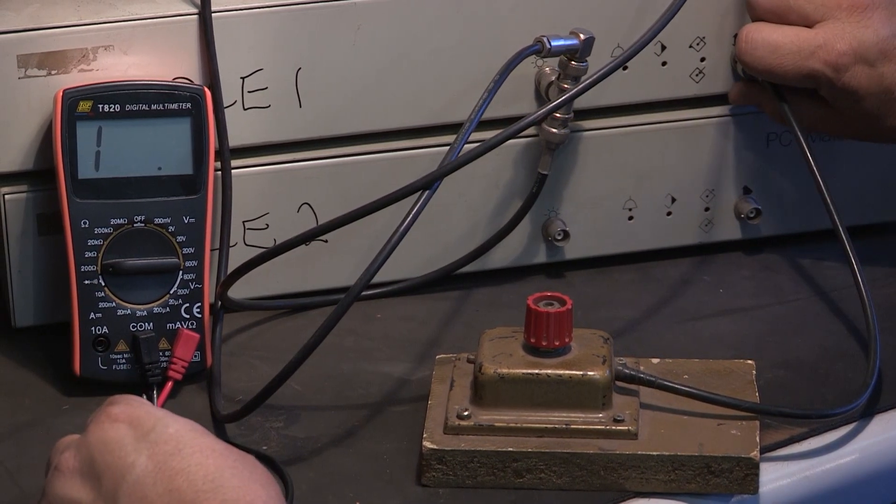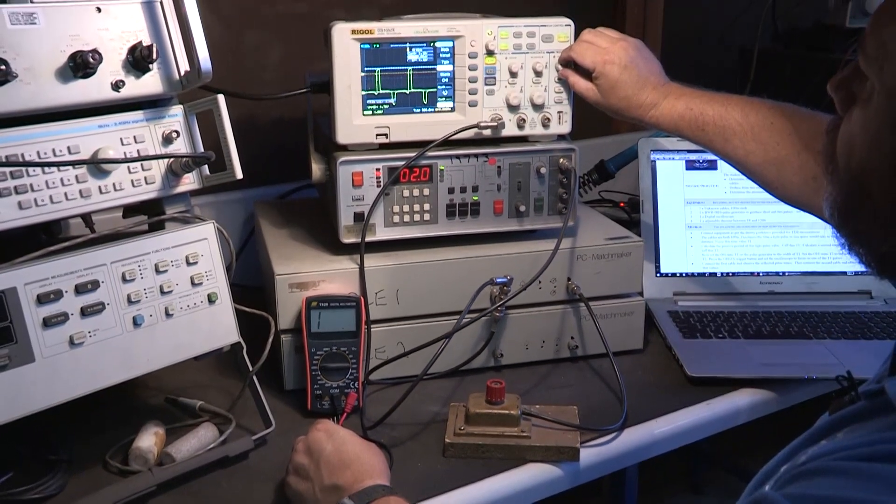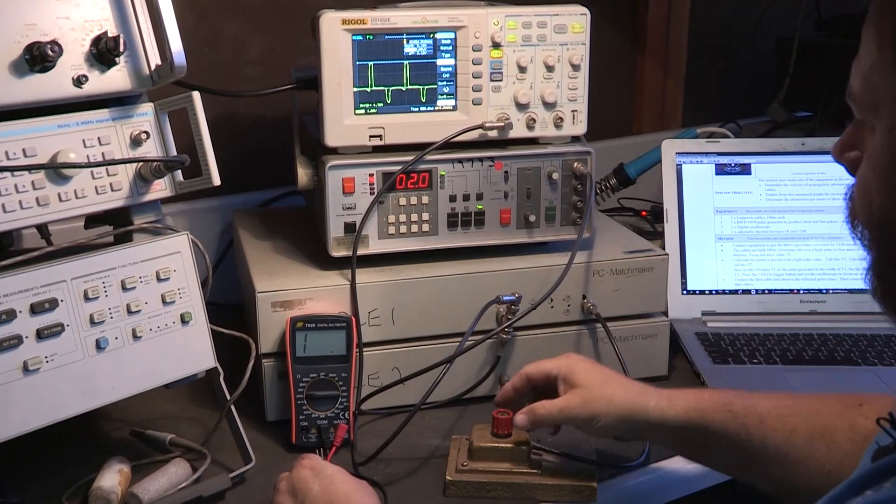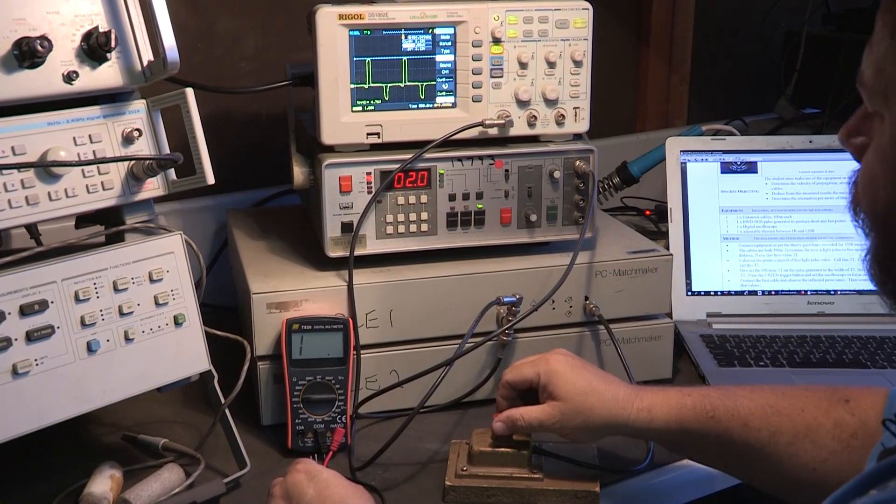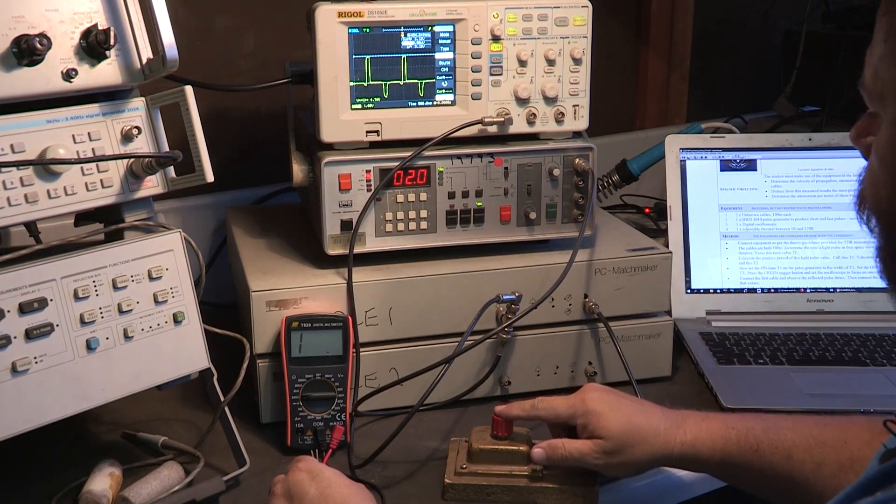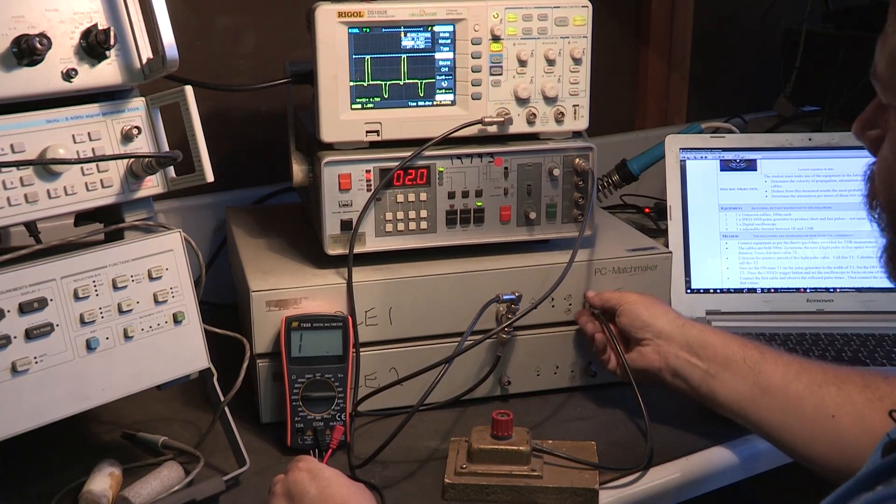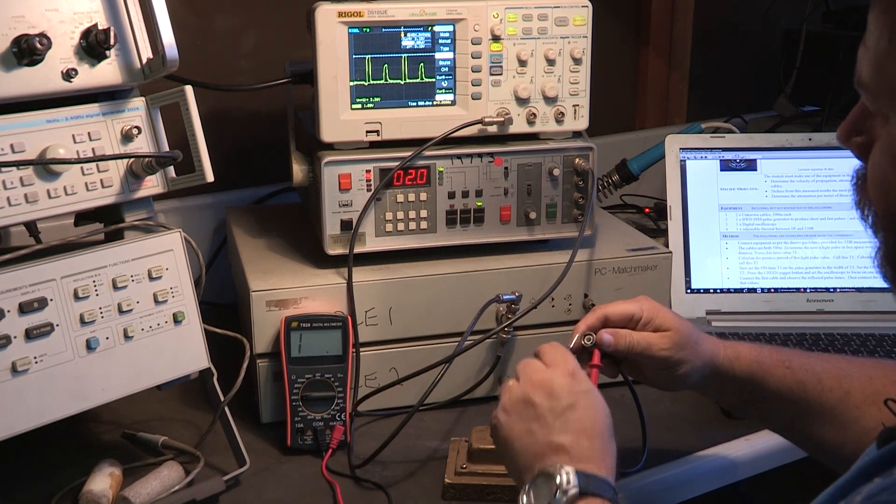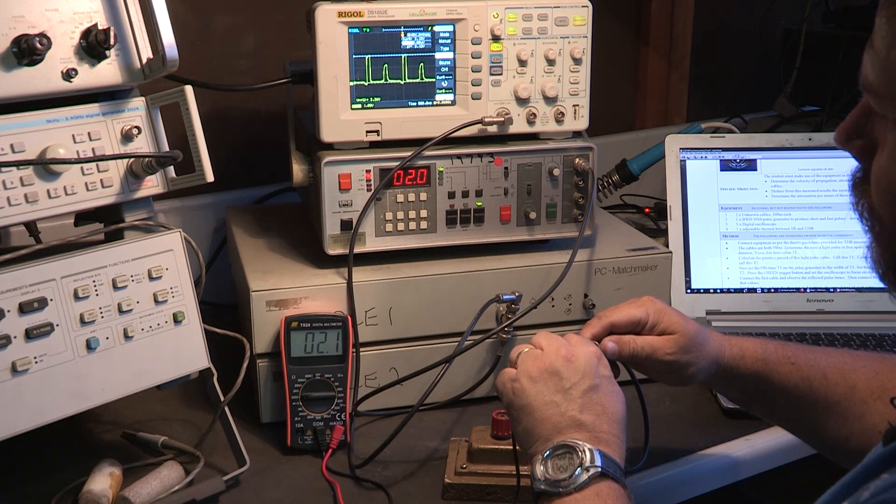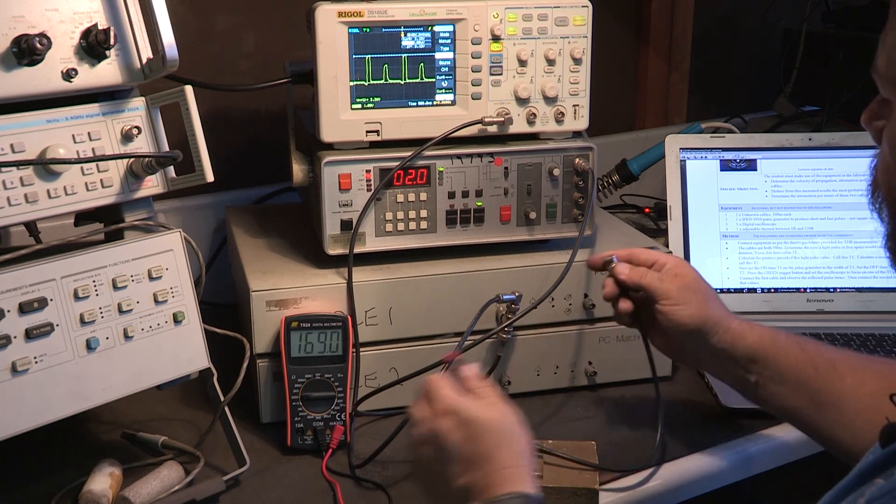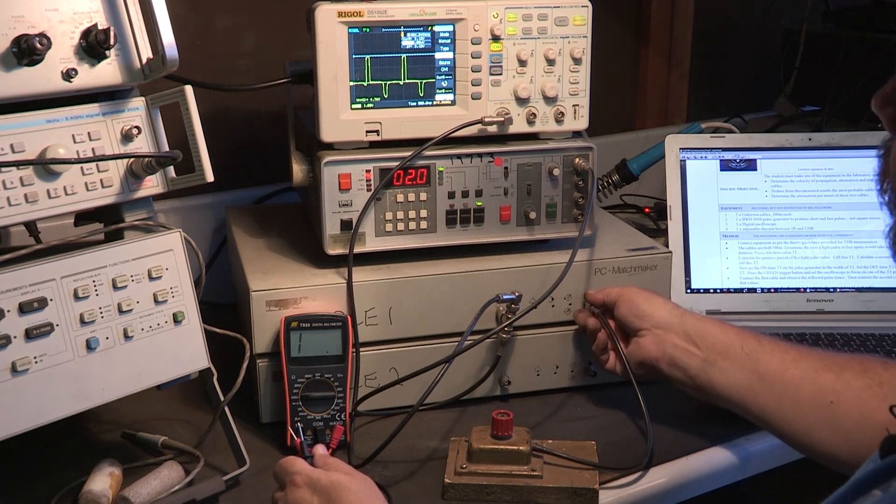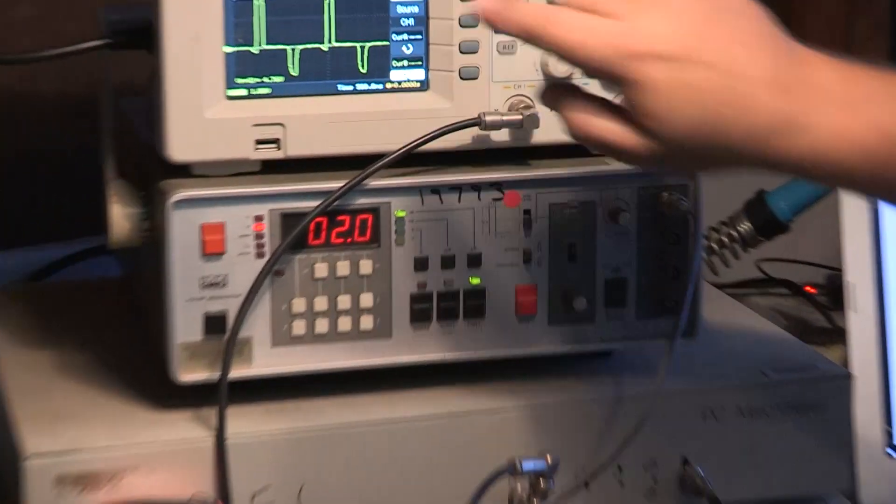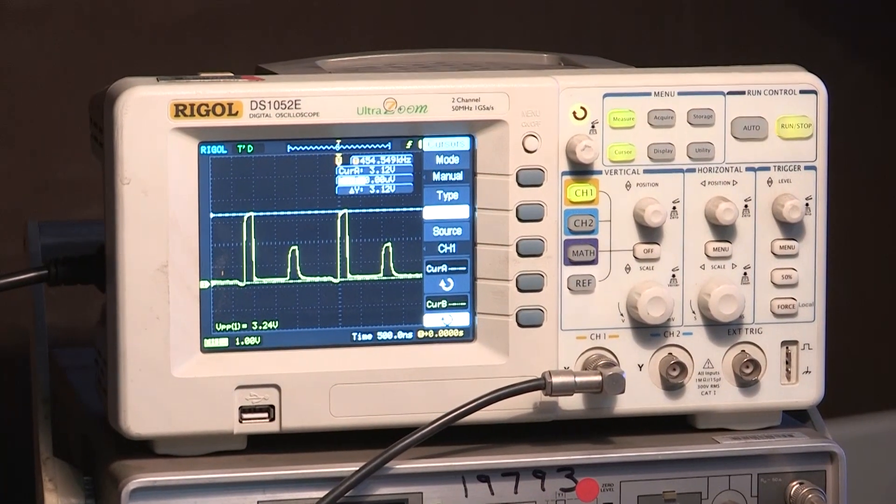So a couple of observations: the signal jumps a bit. Always remember there is something called a trigger level - it helps a lot. So the following happens: if the resistance is very small, in this case I make it as small as about nothing, two ohms, and I connect it back to the cable, I notice a negative pulse. If I turn the knob, I get a positive pulse.